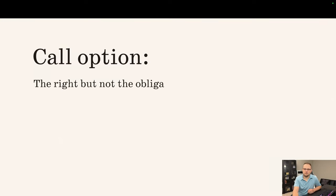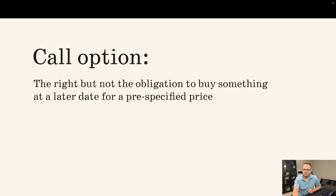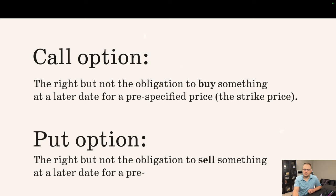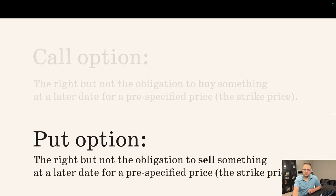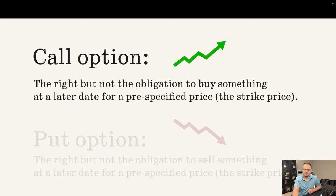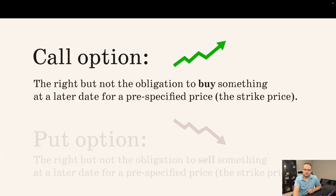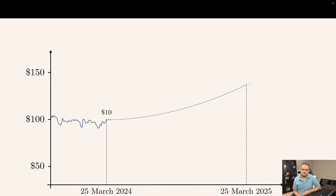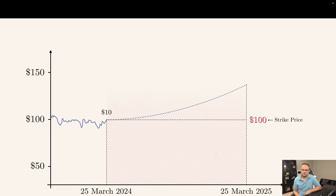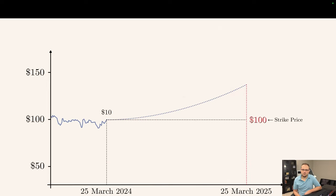A call option gives you the right, but not the obligation, to buy something at a later date for a set price, known as the strike price. You can also buy a put option, which gives you the right, but not the obligation, to sell something at a later date for the strike price. Put options are useful if you expect the price to go down. Call options are useful if you expect the price to go up. For example, let's say the current price of Apple stock is $100, but you expect it to go up. You could buy a call option for $10 that gives you the right, but not the obligation, to buy Apple stock in one year for $100. That is the strike price. Just a little side note, American options can be exercised on any date up to the expiry, whereas European options must be exercised on the expiry date. To keep things simple, we'll stick to European options.